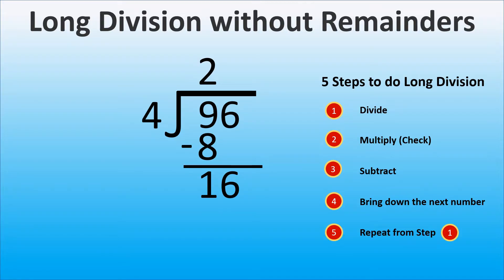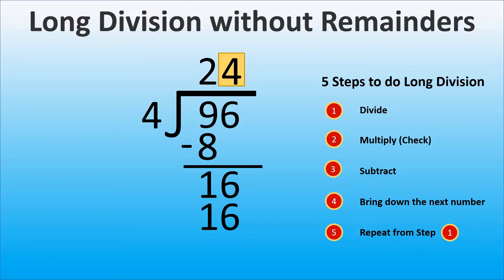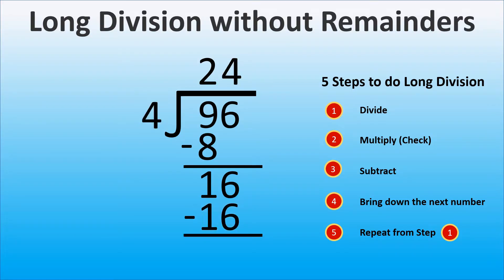Step 5 is to repeat from step 1 until all the digits in the dividend are divided. Again, we choose the closest number to 16 that can be divided by the divisor. It is 16. 16 divided by 4 equals 4, so we write 4 above the long division sign on top of number 6, because 6 is in the ones place. Now we check: 4 times 4 is 16, and as we did everything correctly, we are ready to subtract.